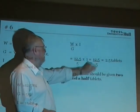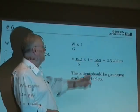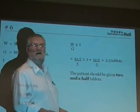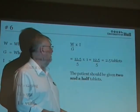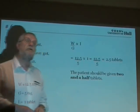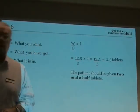12.5 times 1 is 12.5. 12.5 divided by 5 is 2.5. The patient should be given 2.5 tablets.